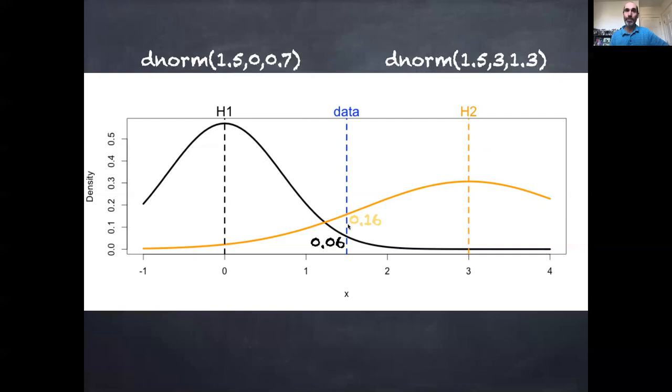And so because this orange curve is higher at 1.5 than the black curve is at 1.5, we're going to say that hypothesis two is more likely to have produced this observation at 1.5 than hypothesis one was.